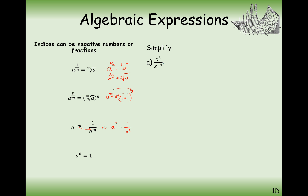First example: x cubed divided by x to the power of minus 3. We subtract our indices, so that's x to the power of 3 minus (minus 3). A double negative happens here and we get x to the 6. This is a rule from about two videos ago.